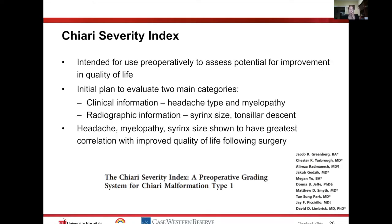The Chiari Severity Index was retrospectively developed. Researchers looked at a cohort of patients, assessed how they did, grouped them by categories, and performed multivariate analyses of different presenting symptoms to identify which symptoms correlated with patient outcomes. Working back from outcomes to initial presenting symptoms, they developed the Chiari Severity Index, intended to be used before surgery to assess potential for improvement in quality of life.